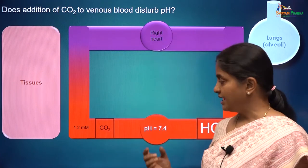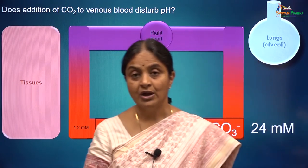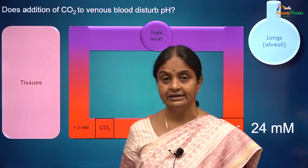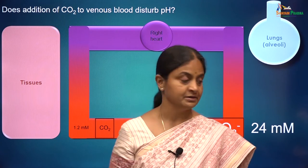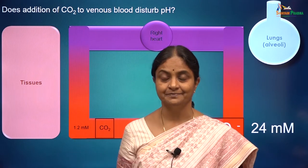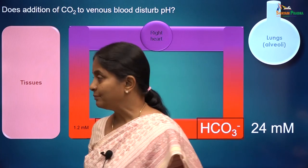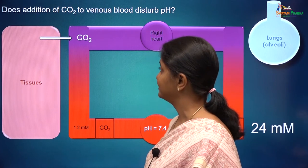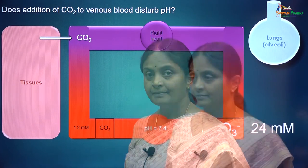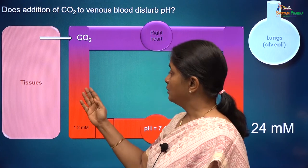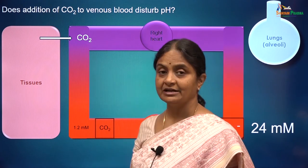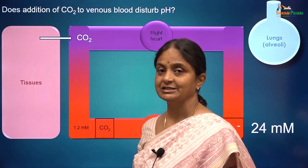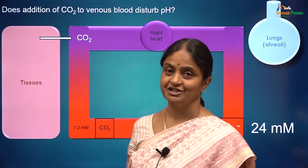The pH of arterial blood is 7.4 because the ratio of bicarbonate to carbon dioxide in arterial blood is 20 — that is, 24 divided by 1.2. When blood courses through tissues, carbon dioxide is added to venous blood. The next consideration will be whether the pH of venous blood changes when new carbon dioxide is added to plasma — we will consider that in the next session. Thank you for watching.